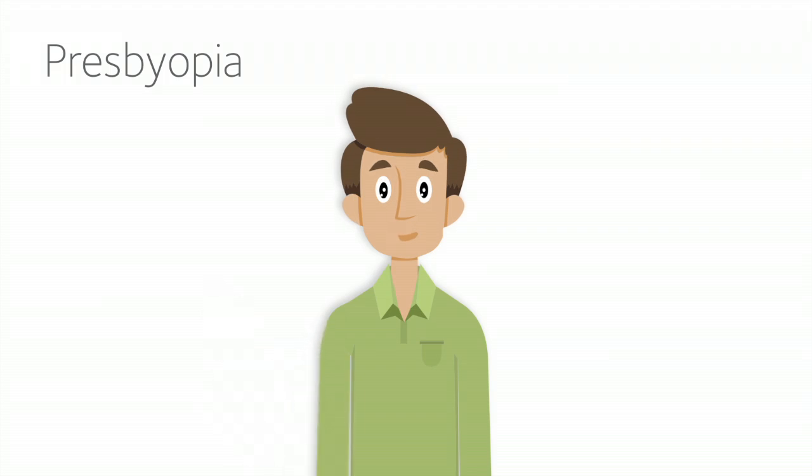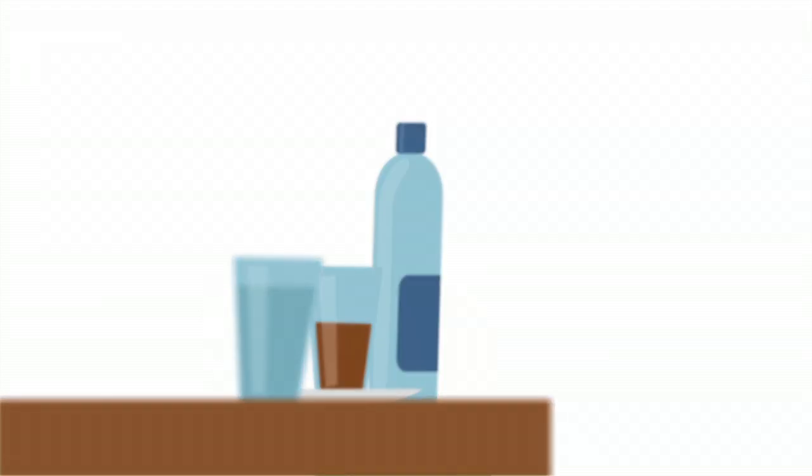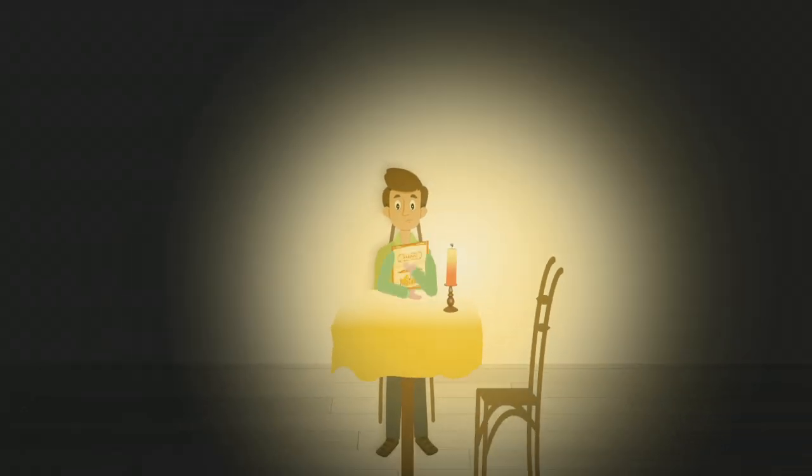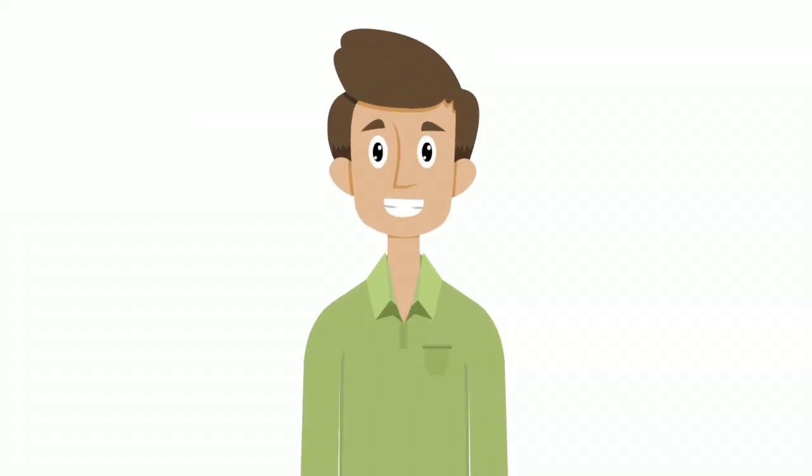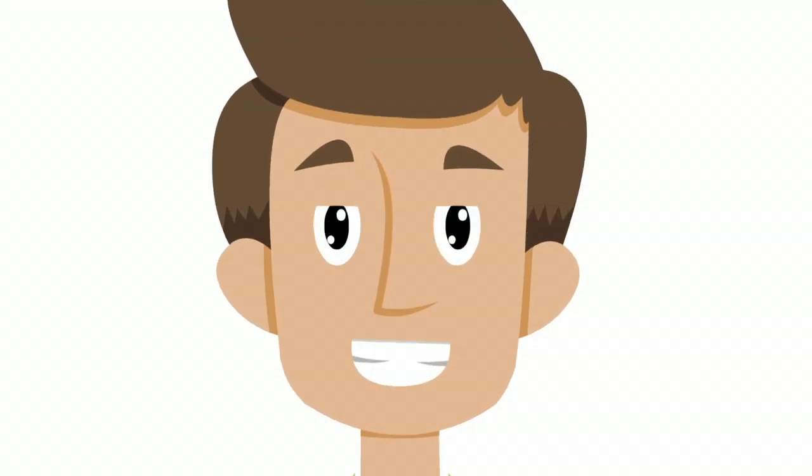Presbyopia is the progressively diminished ability to focus on near objects and fine print, particularly in low-light situations, like reading a menu in a darkened restaurant. This condition affects everyone, usually after age 40, including those of us who have always had 20-20 vision.